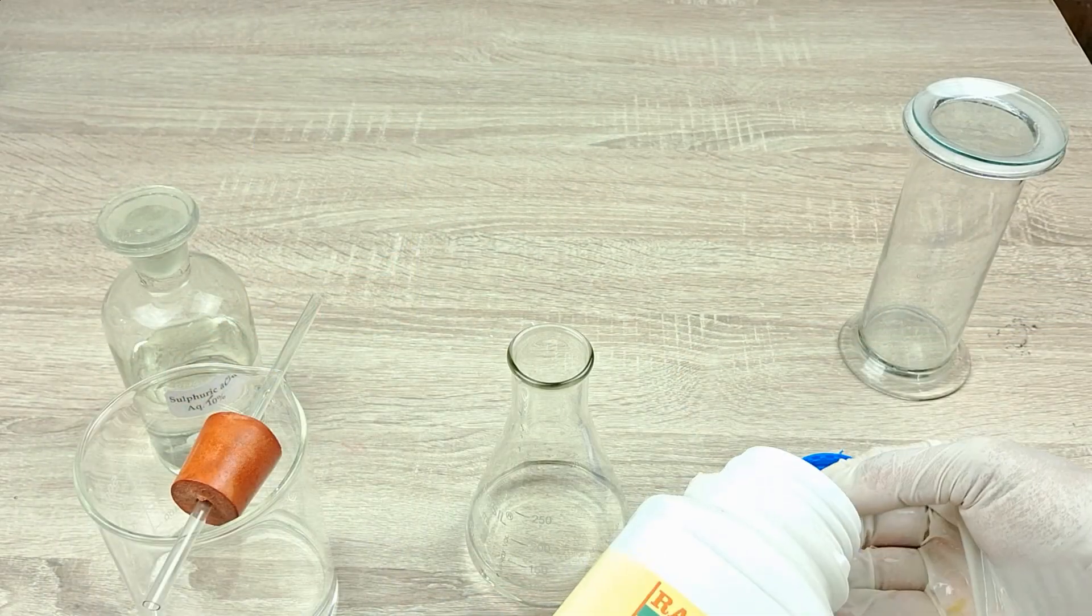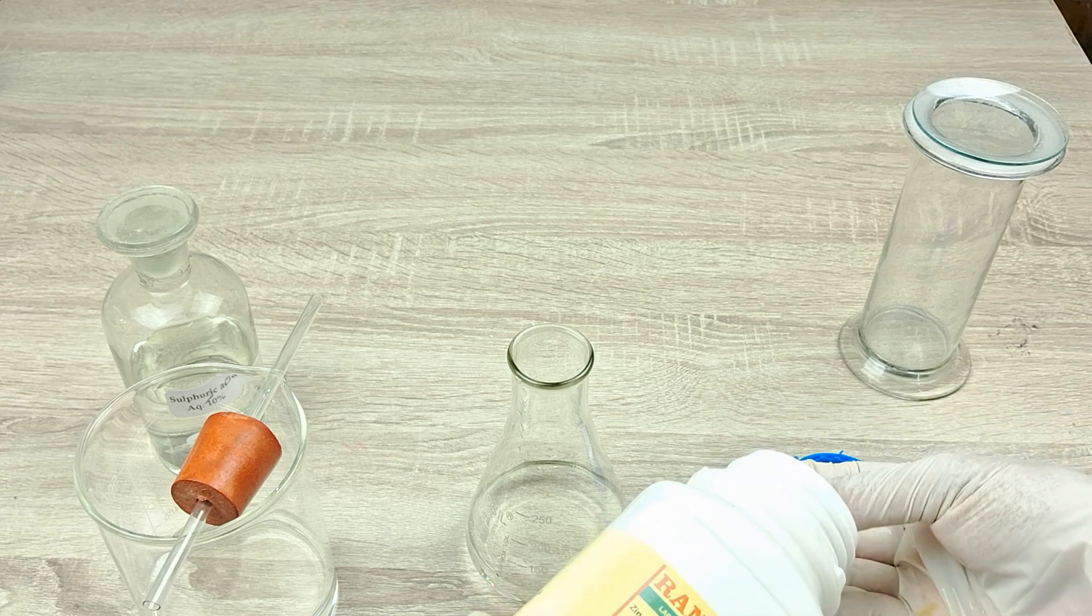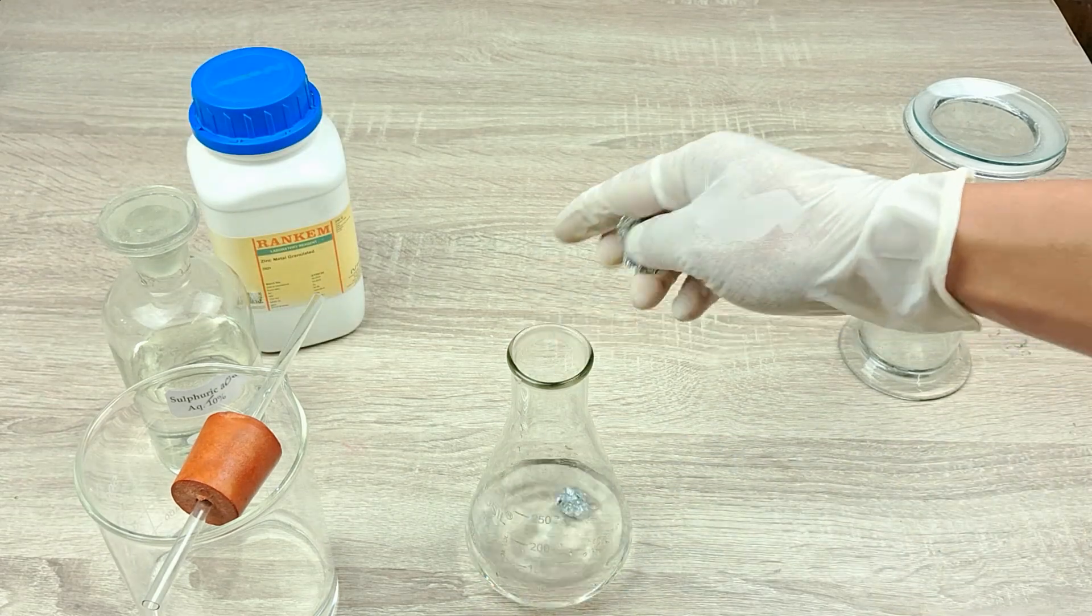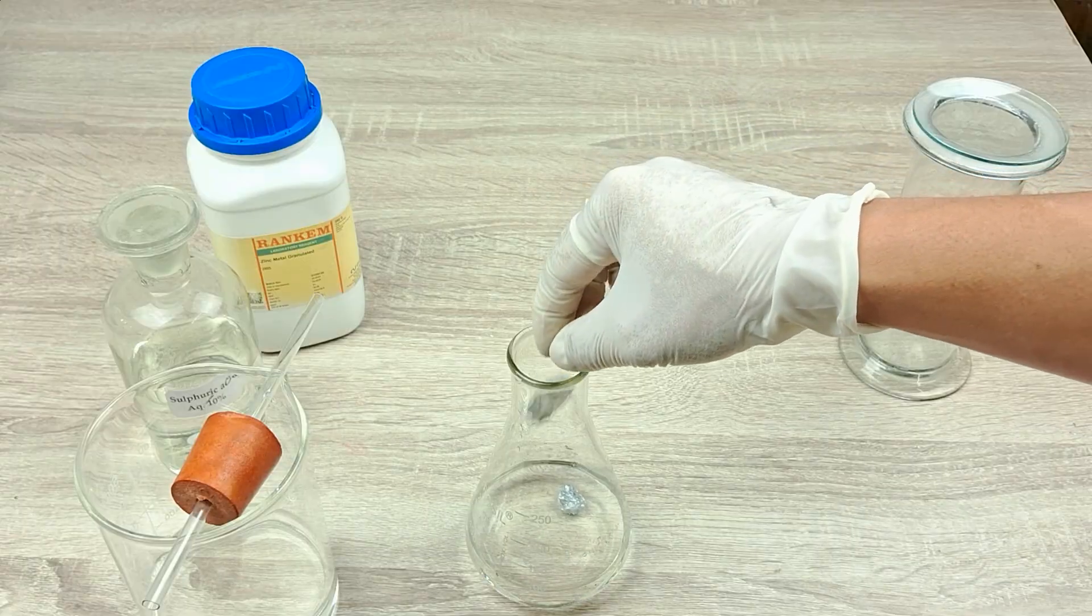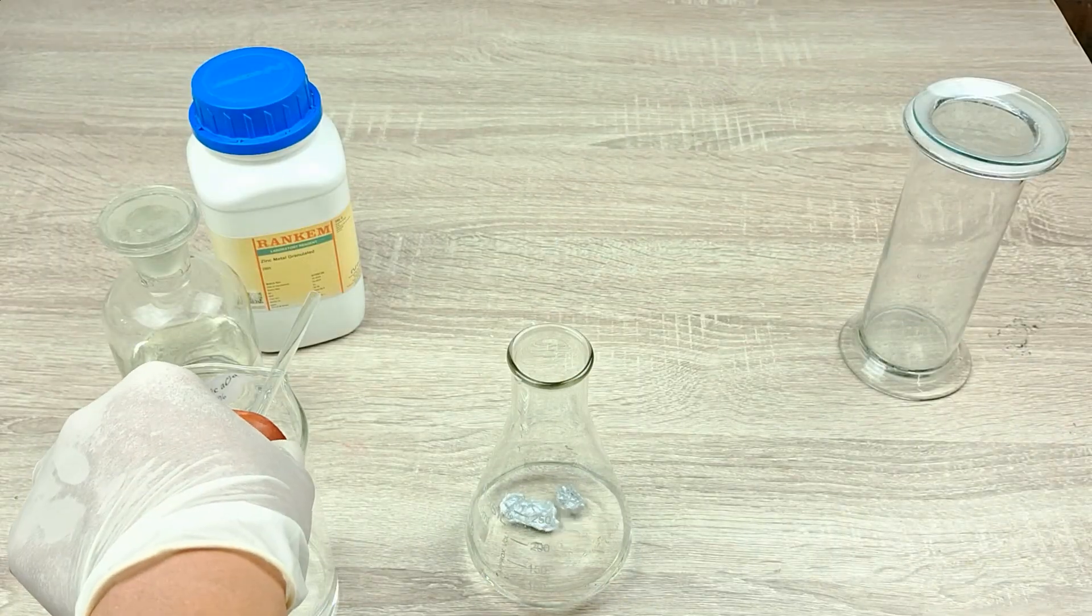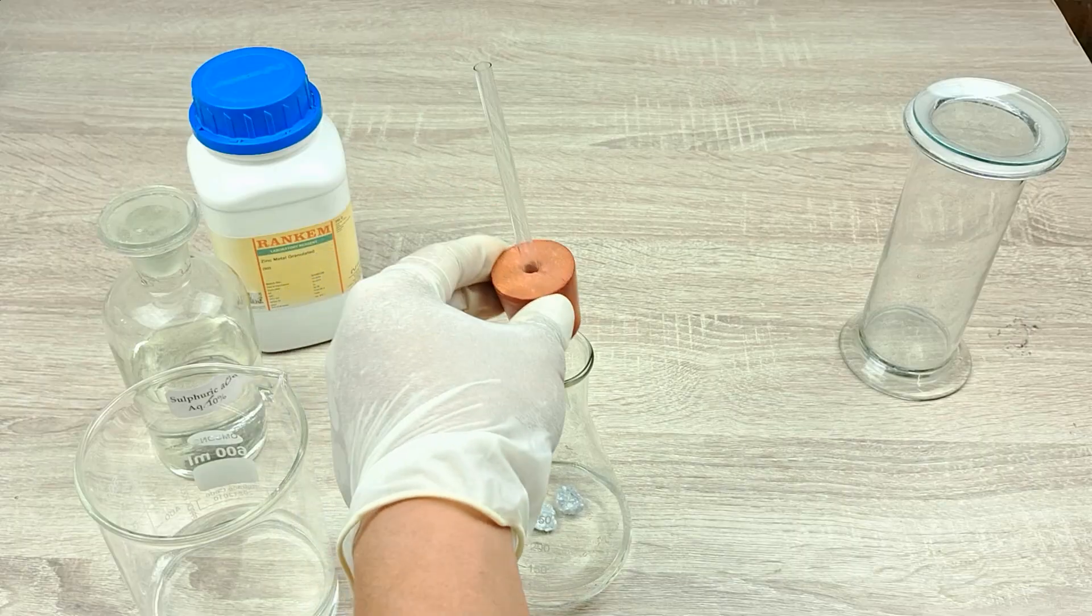Next, introduce a few pieces of zinc granules into the flask containing the acid and quickly cover the mouth tightly with the rubber cork. Allow a minute or so for the reaction to commence in the flask.